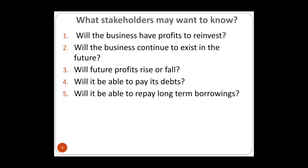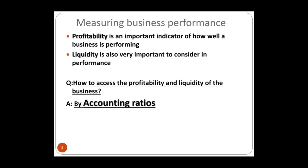When talking about business performance, there are two parts: profitability — an important indicator of how the business is performing — and liquidity, which is also important and related to money. To measure business performance, we use ratios. Ratios give us numbers that indicate something meaningful about the business.